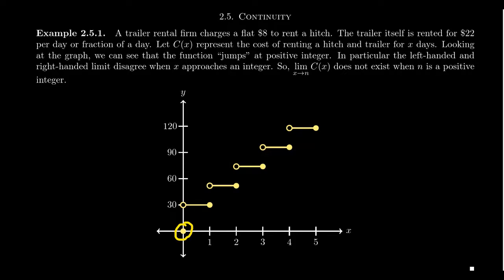You could potentially rent a trailer for the square root of two of a day — something like 1.4 days is perfectly reasonable. It doesn't matter what portion of a day you rented; you get charged for the whole day if you go past zero. For zero days, you'd be charged nothing. If you rent the trailer for any fraction of one day, you're going to get charged $30 — that's the $8 hitch rental fee plus $22 for one day of the trailer.